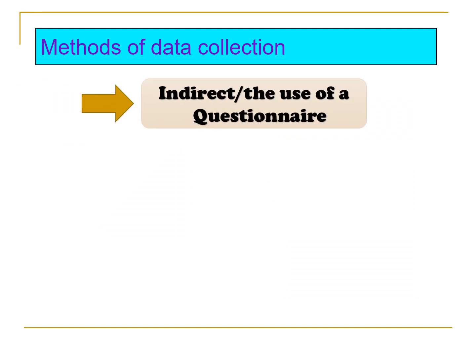The second method of data collection is the indirect or the use of questionnaire. In this method, the researcher makes use of a written questionnaire. A questionnaire is a research instrument consisting of a series of questions and other prompts to gather information from respondents.